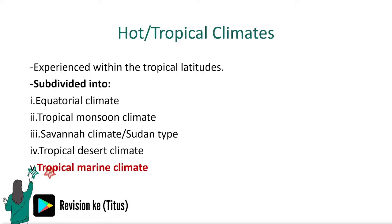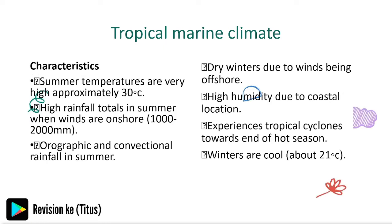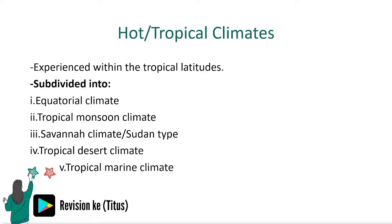The tropical marine climate is found on windward slopes of islands and coastal areas on the east coast of continents under the influence of the southeast trade winds. Characteristics include very high summer temperatures, convectional rain in summer, dry winters due to winds being offshore, and cool winters.